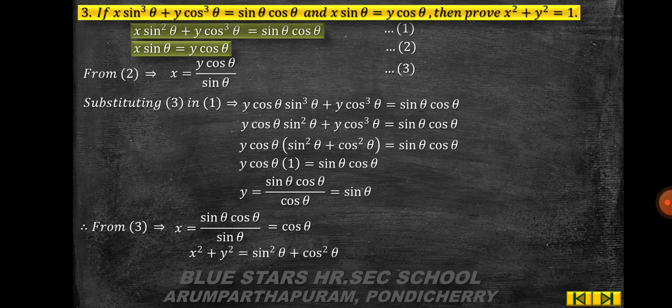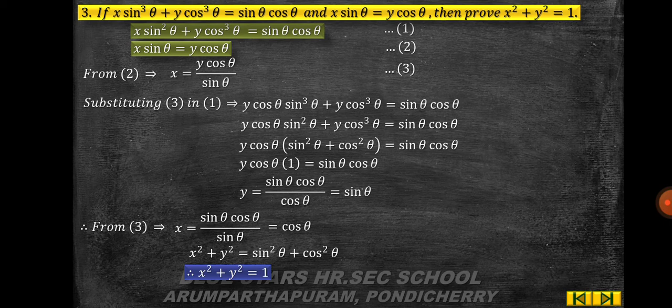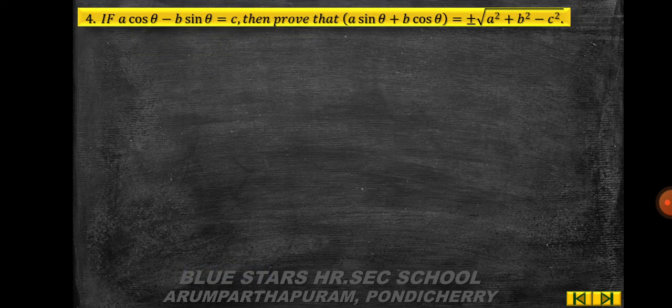Substituting y = sinθ back into equation 3, sinθ and sinθ cancel, so x = cosθ. Therefore x² + y² = cos²θ + sin²θ = 1. Hence proved.